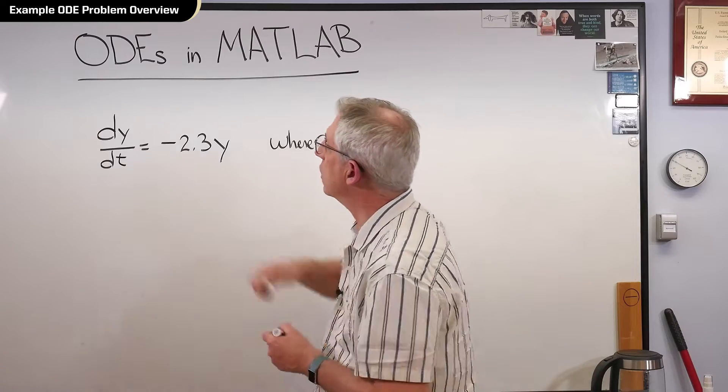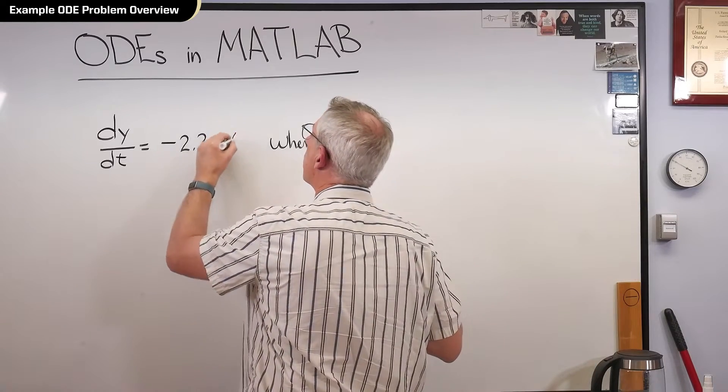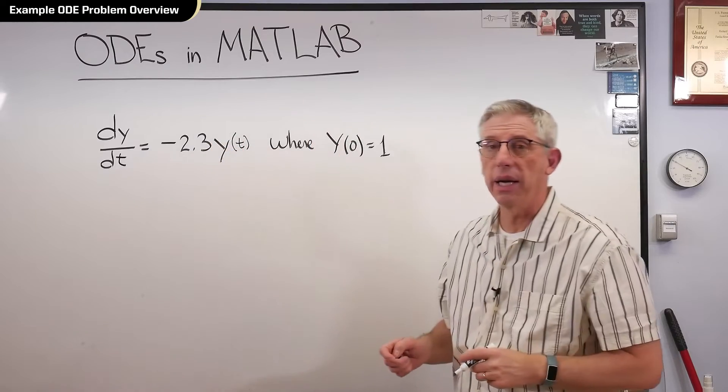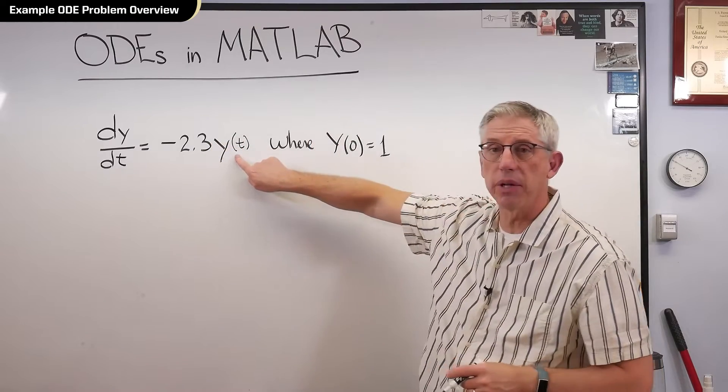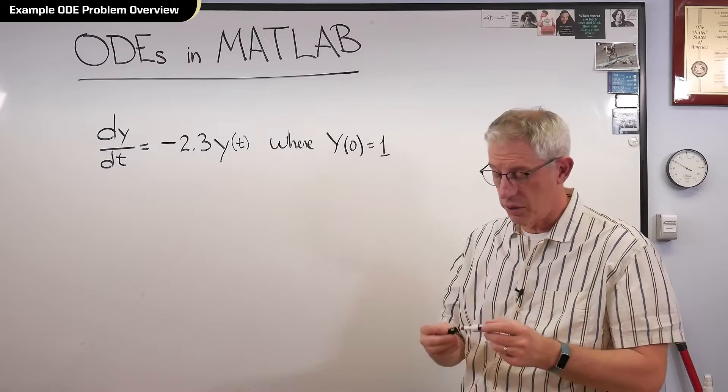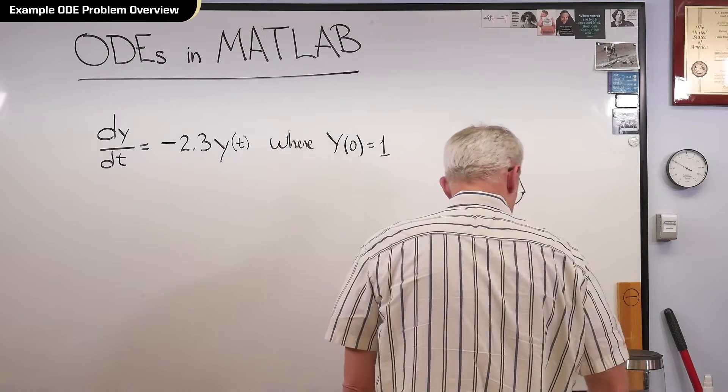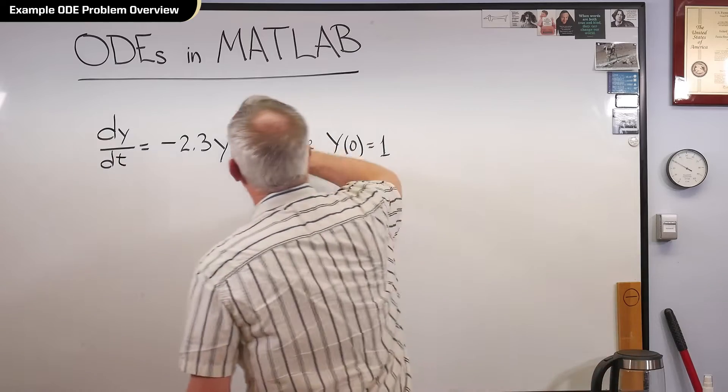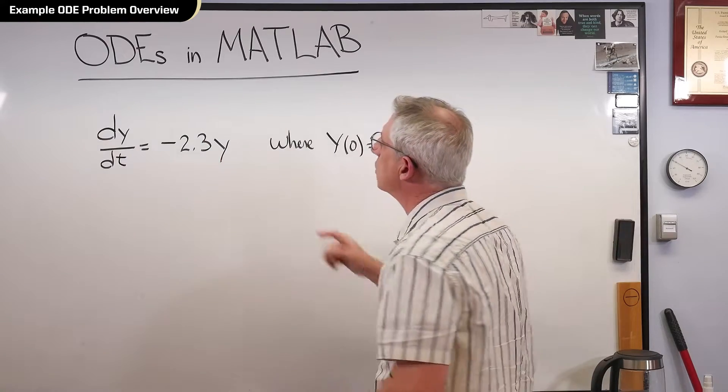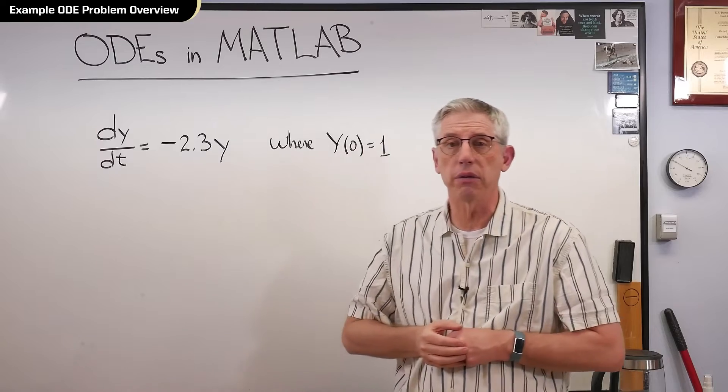So it's actually y of t. It's maybe a little more correct to write this as y of t. In the books and things, they'll leave out the parenthesis t. So y is a function of t. That's usually how it's written. It's understood that y is a function of t.